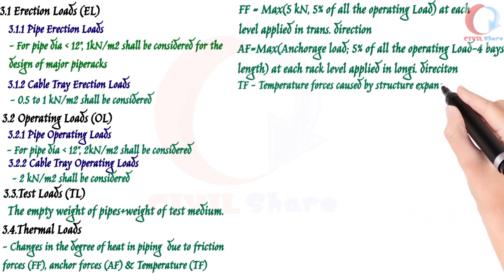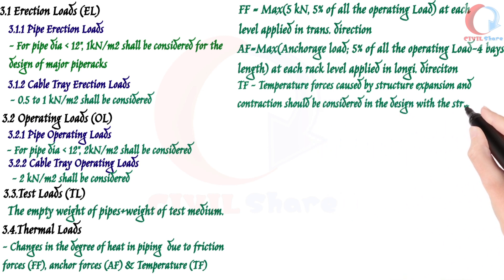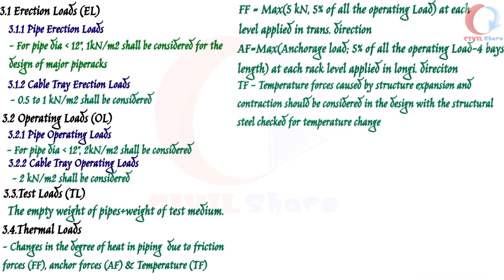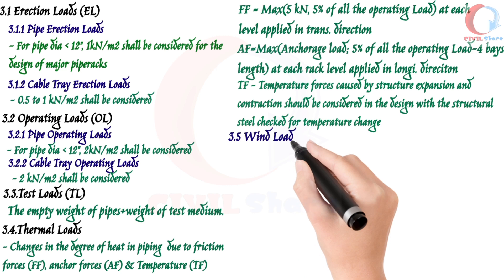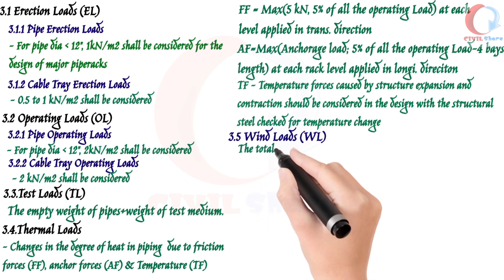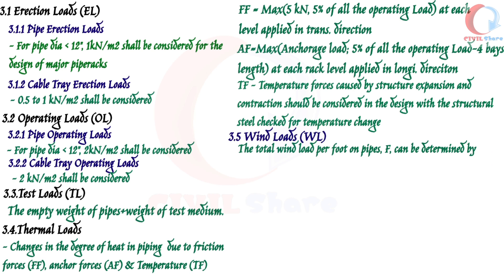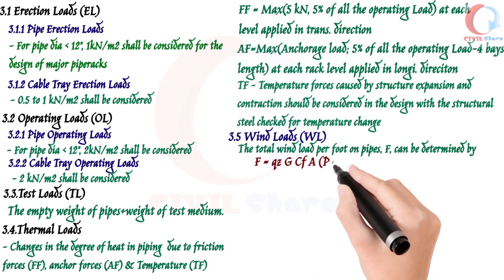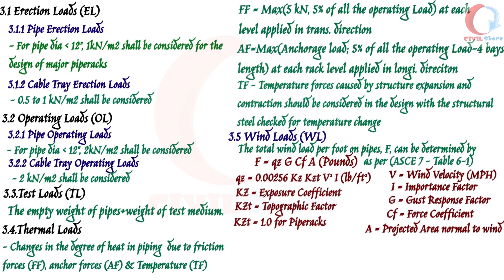Temperature force (TF): forces caused by structure expansion and contraction should be considered in design, with structural steel checked for temperature change in accordance with client standard requirements. Wind load (WL): wind loads on all pipes, equipment, structural members, cable trays, platforms, ladders, and other attachments to the pipe rack shall be considered in the design. The total wind load per foot on pipes (F) can be determined using: F = QZ × GC × FA in pounds, with reference to ASCE 7 Table 6-1. For major pipe racks, the design lateral wind load on pipes at each pipe deck shall be applied accordingly. Longitudinal wind load on pipe racks is negligible compared to other longitudinal forces and can normally be disregarded.